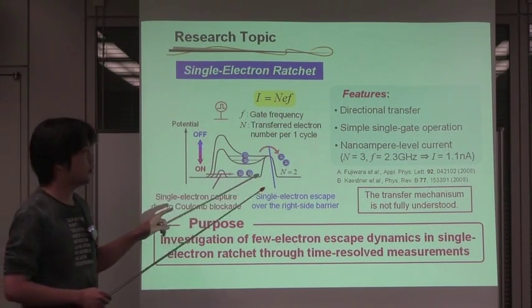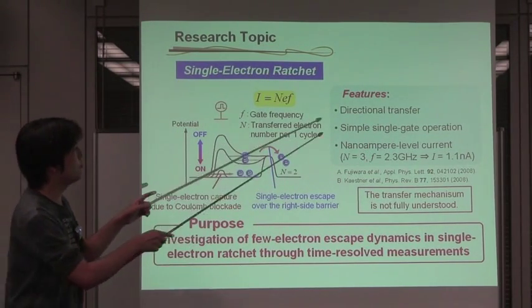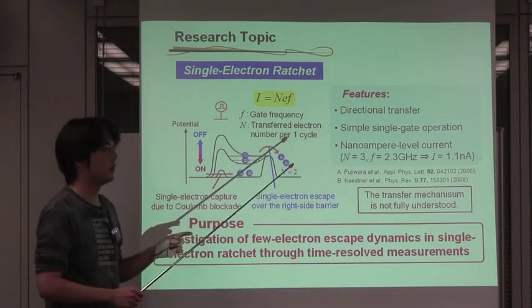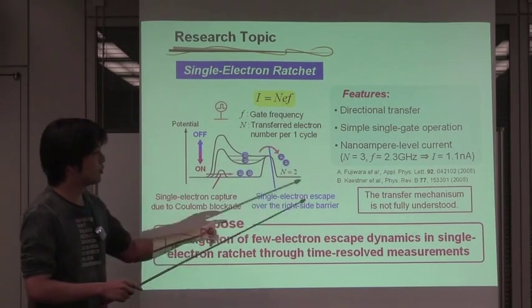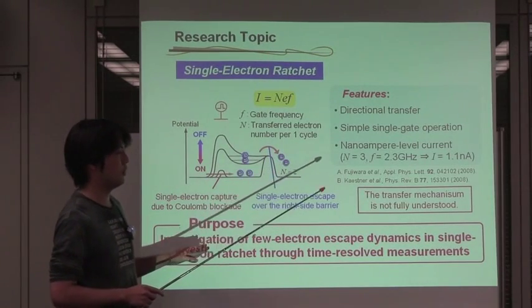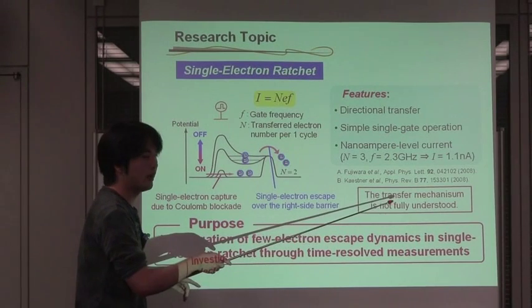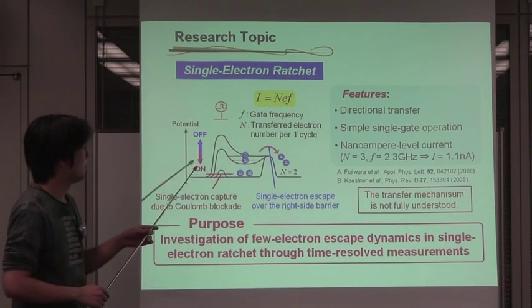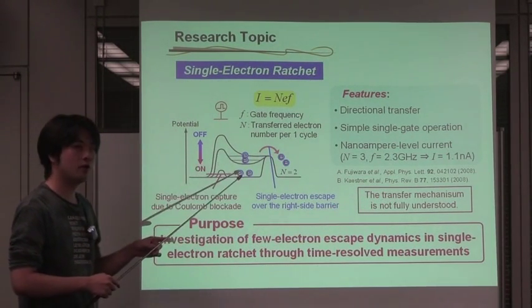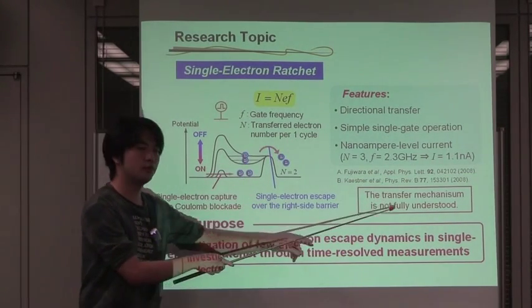Recently, we achieved the nano-ampere level current by using the simple single gate operation. However, the transfer error is still large on the order of 10 to the minus 2, and the mechanism of the error involved during the single electron capturing and the single electron ejection is not fully understood.